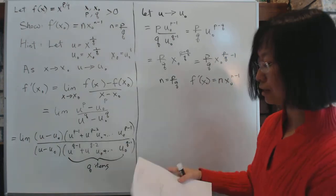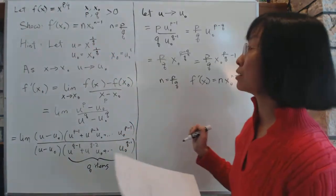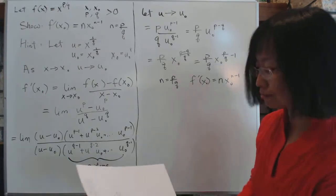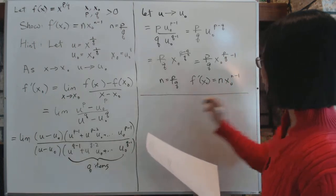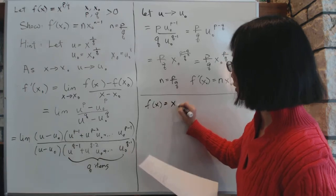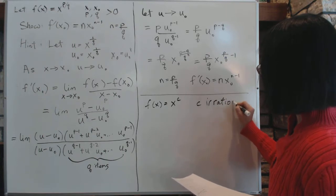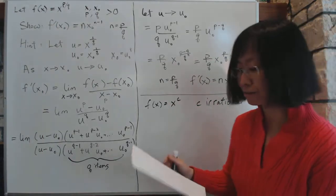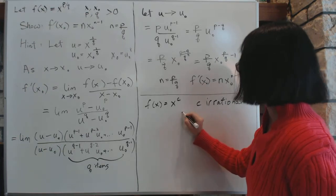Now, so we have assumed in this proof that x is to a power of rational number, you know, p over q are integers. Now, what if p over q are not integers? That is, suppose you have another similar problem, but this time we will say f of x equals x power c, where c is irrational. Then what? If c is irrational, then we can't pull this trick at all, because there's no p q that will replace it.